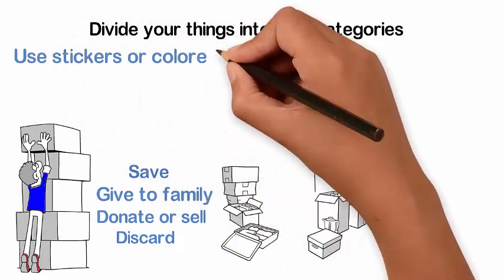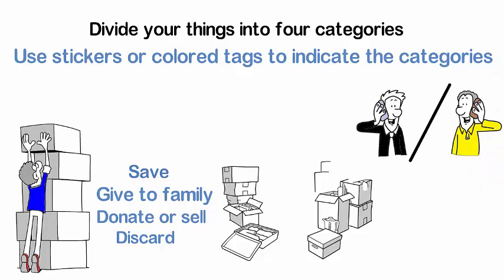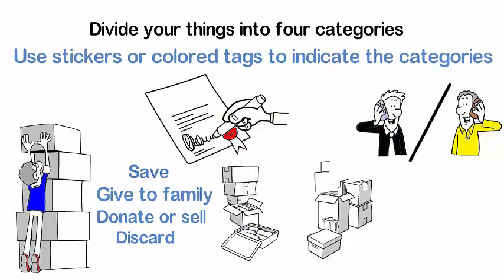Use stickers or color tags to indicate the categories. Ask a professional organizer like Brunswick Organizing Solutions to help you and your parents declutter. Ask a tax preparer what documents need to be kept and then shred everything else.